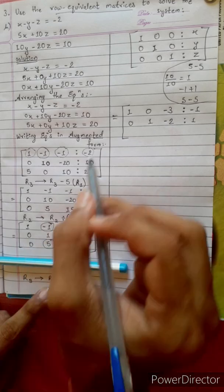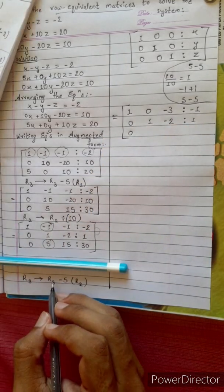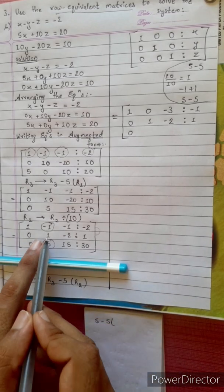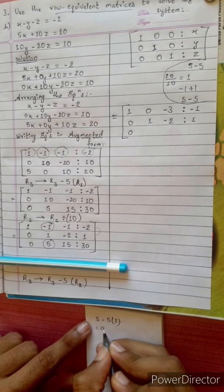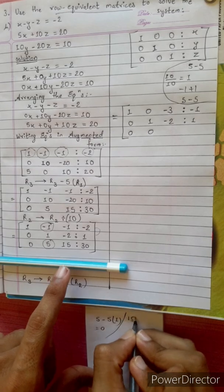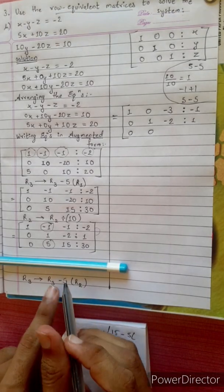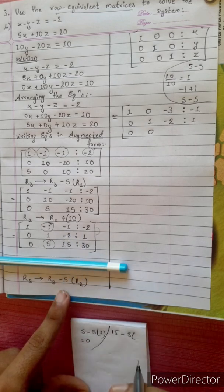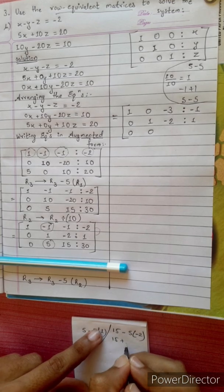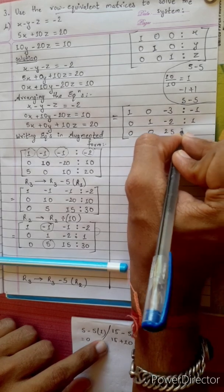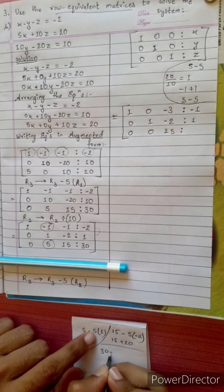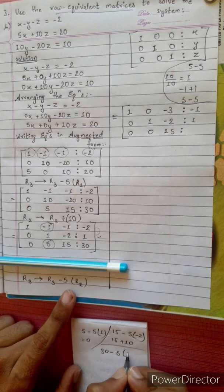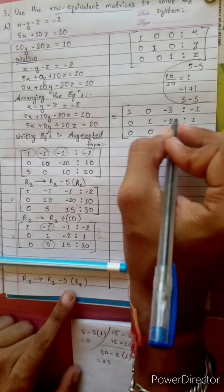Continuing R3 minus 5 times R2: second element 5 minus 5 times 1 equals 0; third element 15 minus 5 times minus 2 equals 15 plus 10 equals 25; right-hand side 30 minus 5 times 1 equals 30 minus 5 equals 25. So new R3 is [0, 0, 25 | 25].